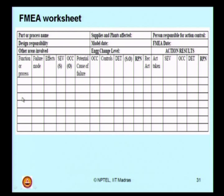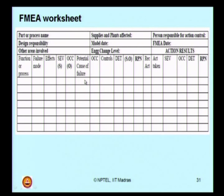You will identify the function or the process in a given system, then identify the failure mode. Look for the effects of that failure on the overall performance of the system. Then look for the severity and occurrence of those failure modes, and also list the potential causes of that failure. Also look at what will be the occurrence.